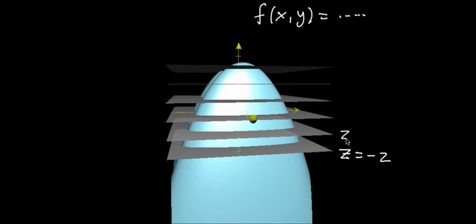And if you let z increase, keep it constant, but let it increase by one to negative one, we get a new plane, still parallel to the x, y plane, and its distance from the x, y plane is negative one.